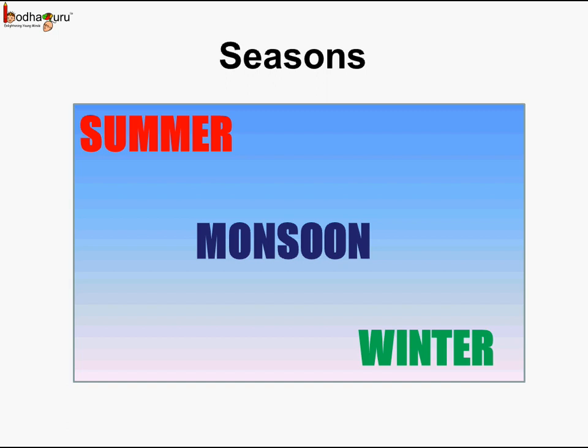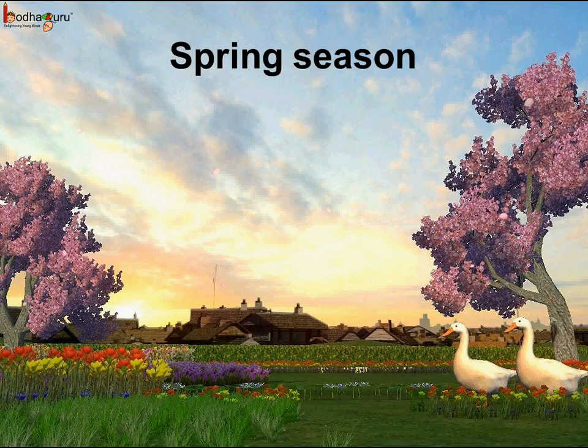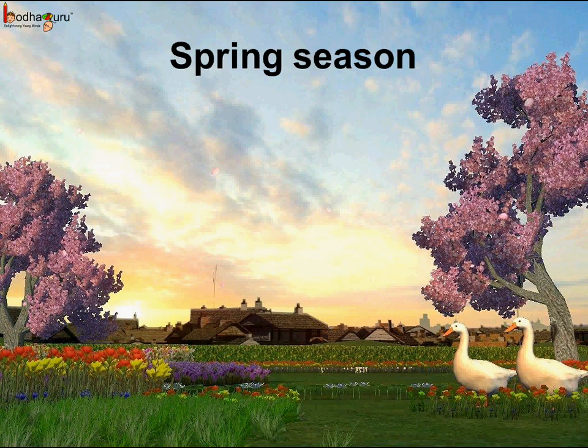So the three main seasons are summer season, monsoon season, and winter season. There are other seasons also, like the spring season. In spring season, the weather is very pleasant, and all the plants and trees are covered with new green leaves and flowers start blooming. Spring is the season to enjoy the beauty of nature.